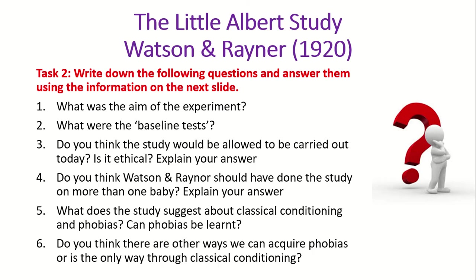The last task is to answer a couple more questions that involve thinking a little bit more about the study and how it was conducted. Write questions one to six on a piece of paper. The aim of the experiment is quite self-explanatory — basically what Watson and Rayner were setting out to achieve, what they were investigating. The baseline tests were the tests given to Little Albert before the study — showing him the animals beforehand and observing his response.